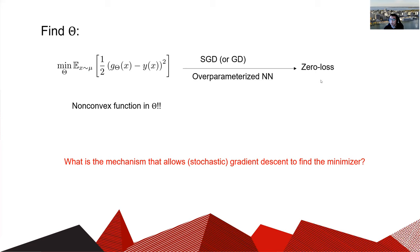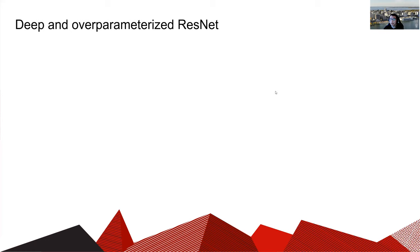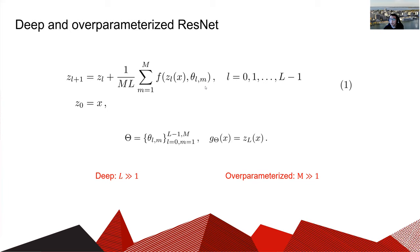It is interesting to study what is the mechanism that allows gradient descent or stochastic gradient descent to find the global minimizer. In our work, we consider the deep and over-parameterized ResNet. We focus on the following ResNet model, where f is an activation function, l is the number of layers, m is the number of parameters in each layer, theta is the parameters we can tune, and g_theta(x) is the output of the neural network.